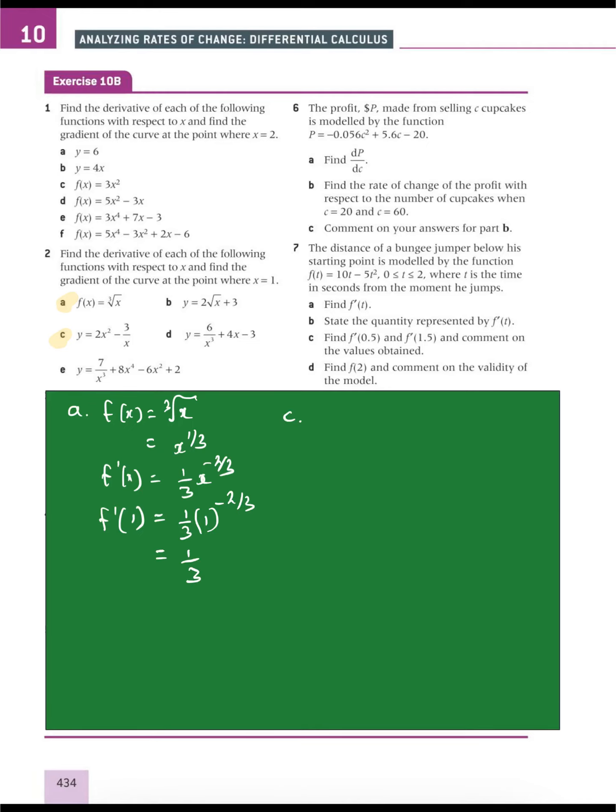Let's have a look at c. y equals 2x squared minus 3 on x. We'll put this in indice form: 2x squared minus 3x to the minus 1. dy/dx equals 4x, since 2 times 2 is 4 and 2 minus 1 is 1. Minus 1 times minus is plus, so that's plus 3x to the minus 2.